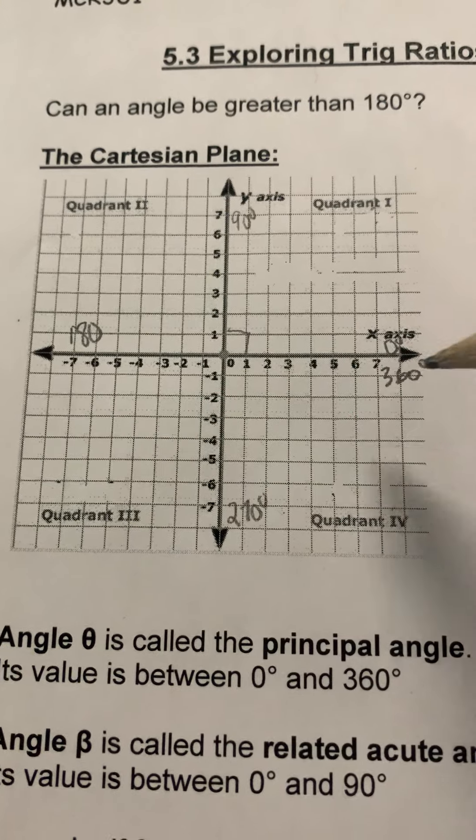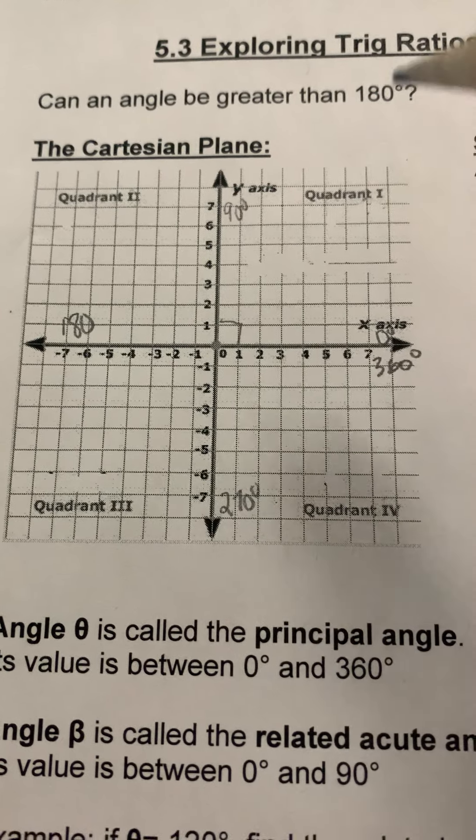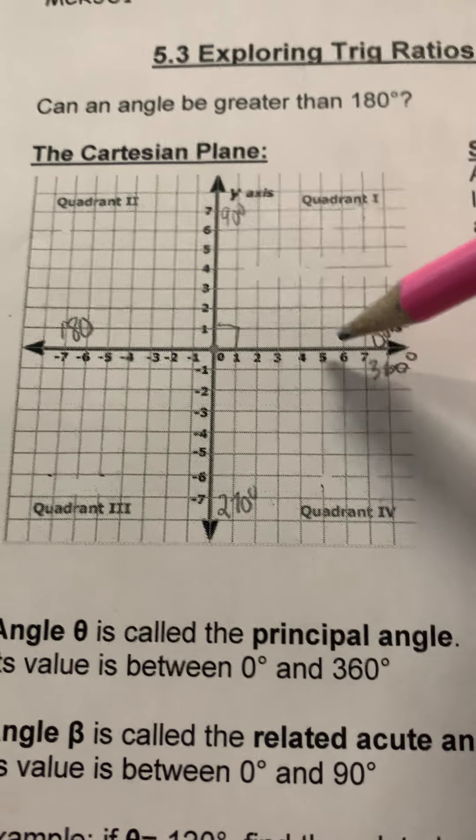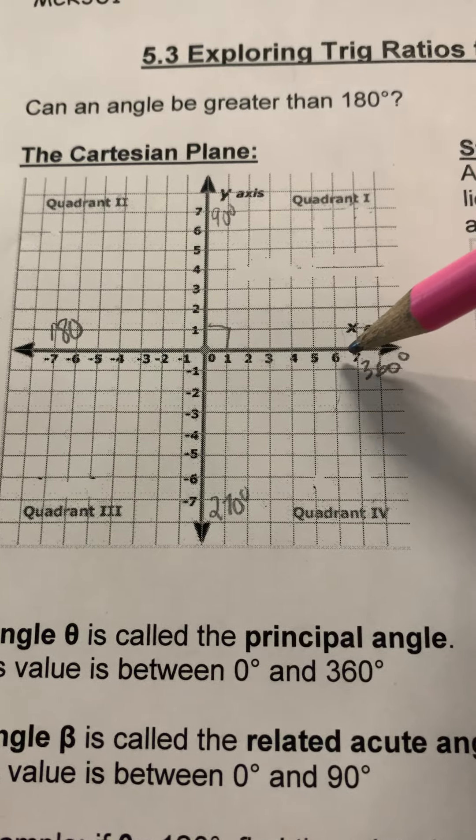5.3: exploring trig ratios for angles greater than 90. So mostly everything we've been doing is for 90 degrees or less, hence our right angle triangles, but we could also work with angles that are greater than 90.